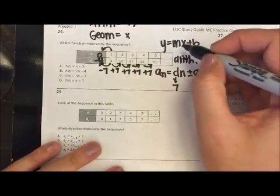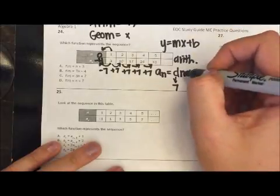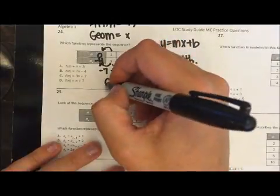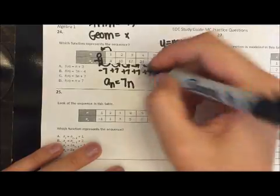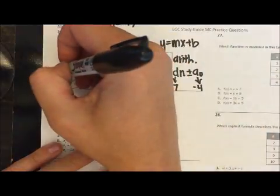So if I'm going to rewrite this, I'm not going to write anything for n. So I'm just going to write a sub n equals 7n, and then a minus 4, which seems to be our B answer.